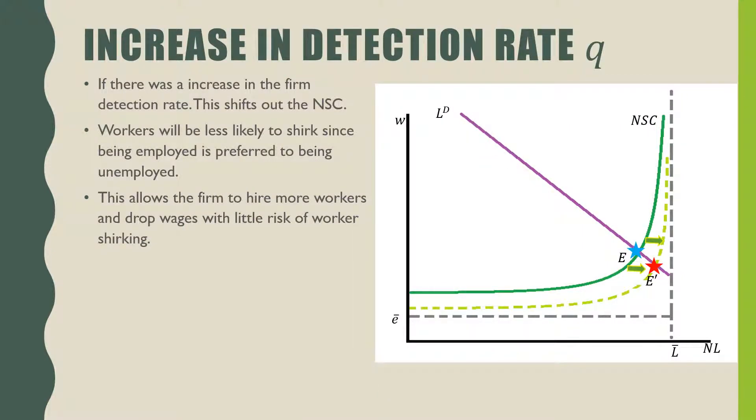Let's shock the model a little bit. If there was an increase in the firm detection rate, this shifts out our no shirking condition. Intuitively, if workers are less likely to shirk since being employed is preferred to being unemployed, this allows the firm to hire more workers and drop wages with little risk of workers shirking.